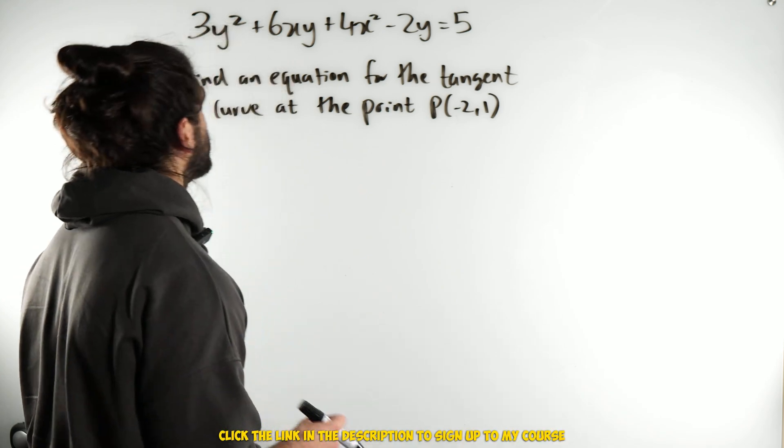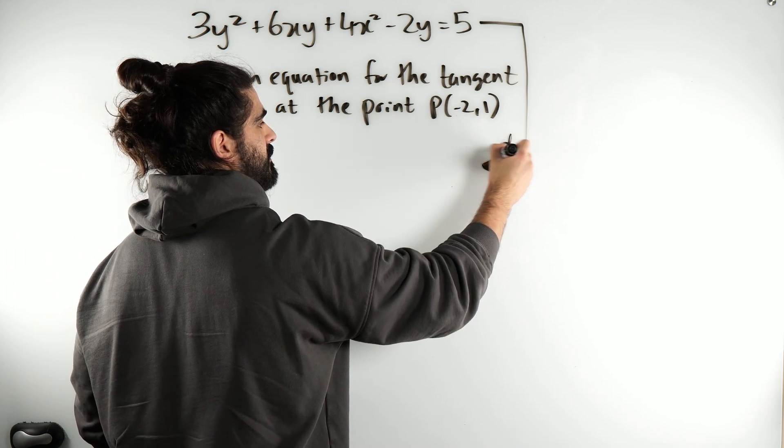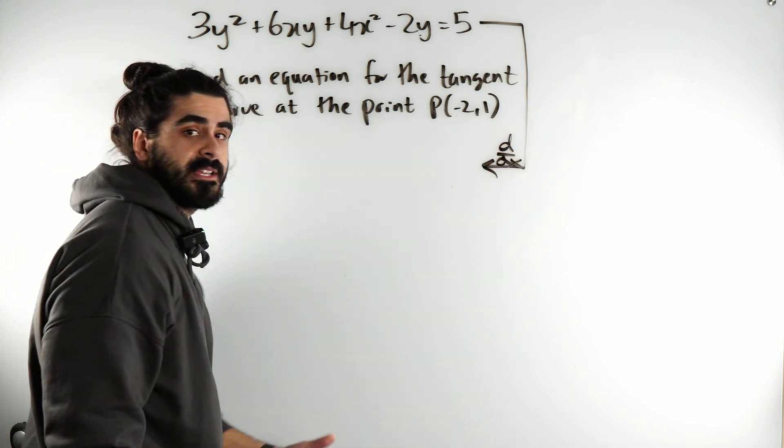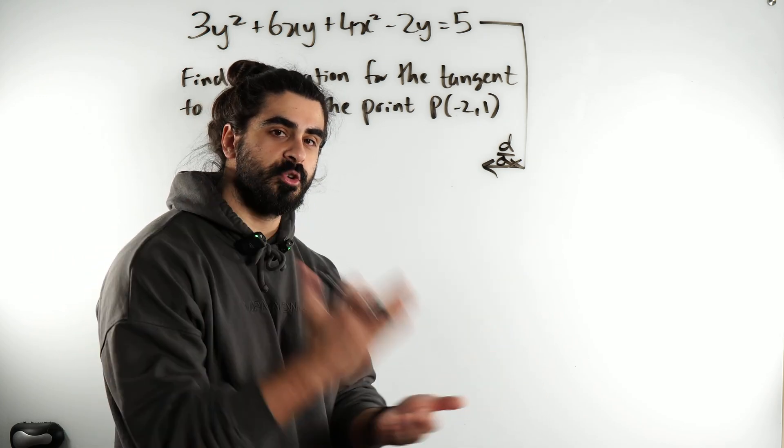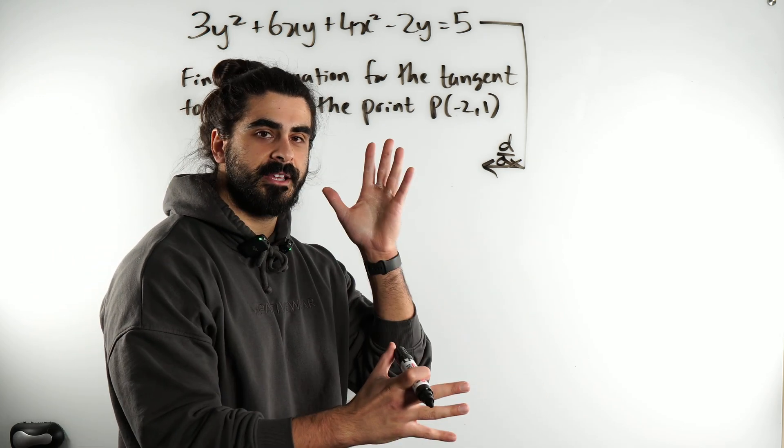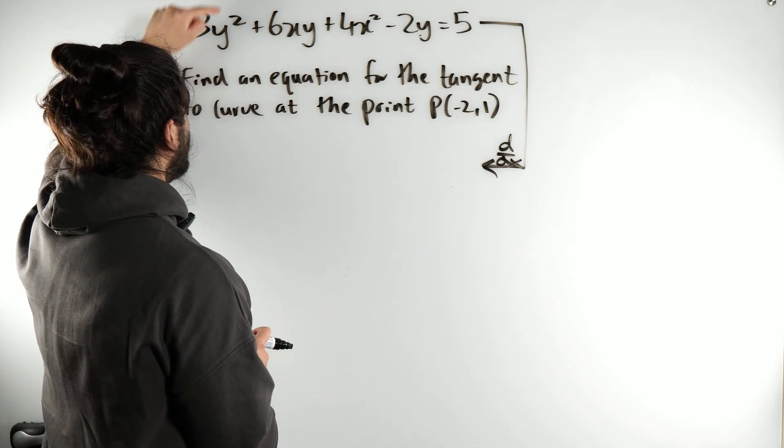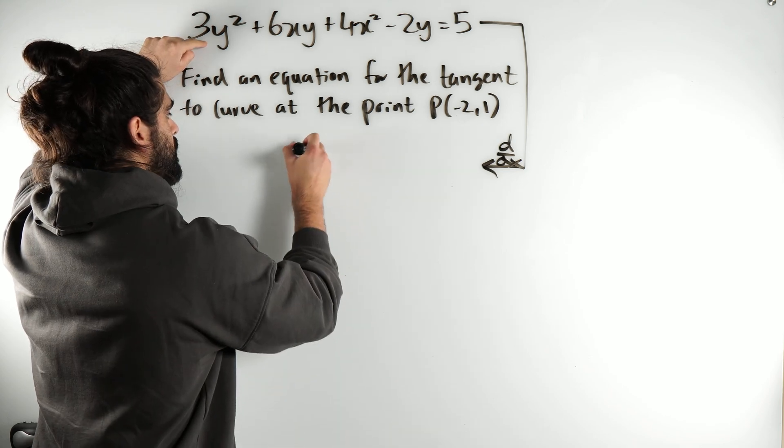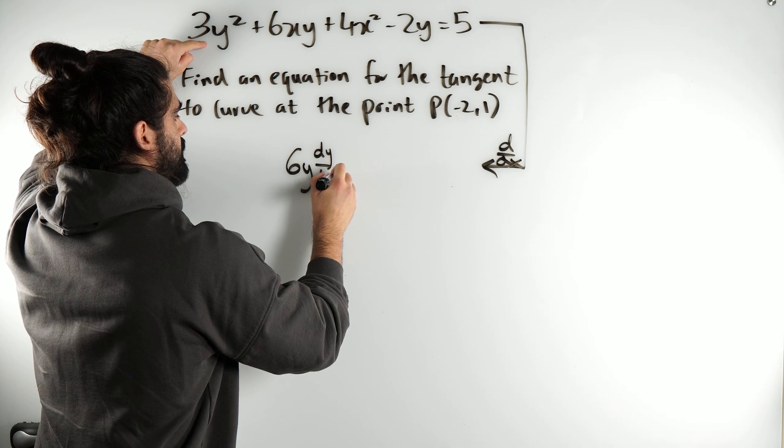So first thing we're going to do is we're going to differentiate this with respect to x. Now we go term by term. Remember when you differentiate a function of y, you differentiate like normal, then you multiply it by dy dx. For example, 3y squared, we know we just bring down the power 6y, so we have 6y, but then we multiply it by dy by dx.